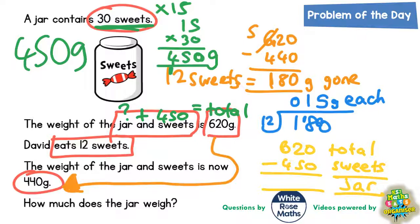So 0 take away 0 is 0, 2 take away 5 we can't do, so borrow. The 6 becomes a 5, and the one we've borrowed makes that into 12. 12 take away 5 is 7, 5 take away 4 is 1. And that's the jar. So the jar must be worth 170 grams.